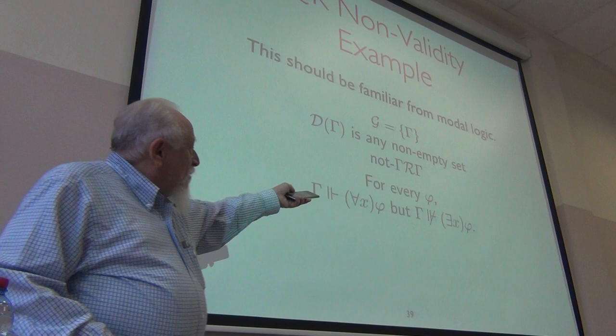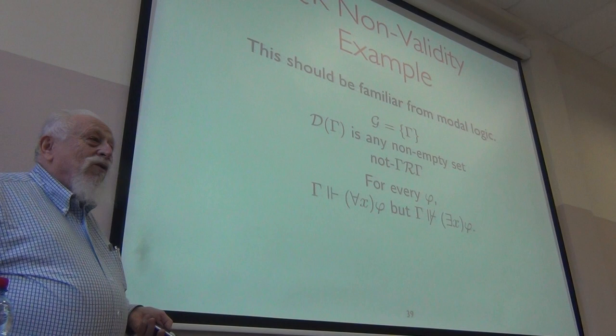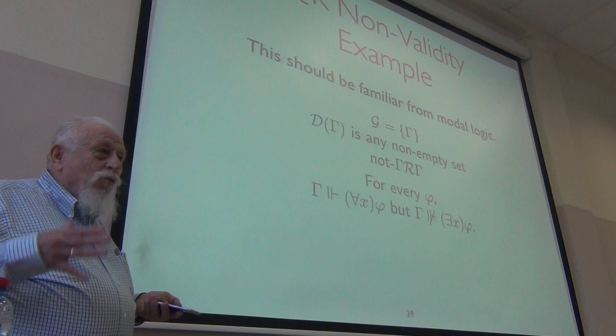But to show the existential, you would have to have an accessible world and an instance that held. This is, in the modal case, essentially the same way you show box doesn't imply diamond in K. You just take a one world model with no accessibility holding.